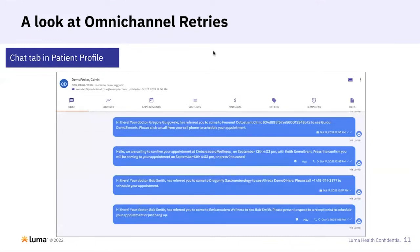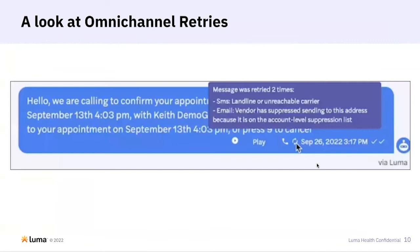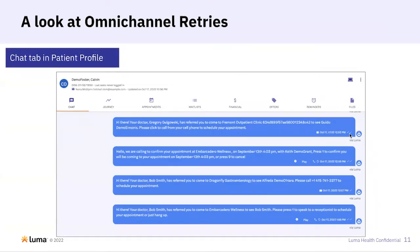The next three slides will show a couple of examples of where in the product you'll actually see these retries and what to look out for. In the chat tab in a patient profile, you can see a couple of messages where we initially delivered an email. This little retry icon is what we're using to denote that. It will show details about the methods of contact that failed, and if it was successfully delivered, you get these two check marks, just like with the other messages that were delivered.